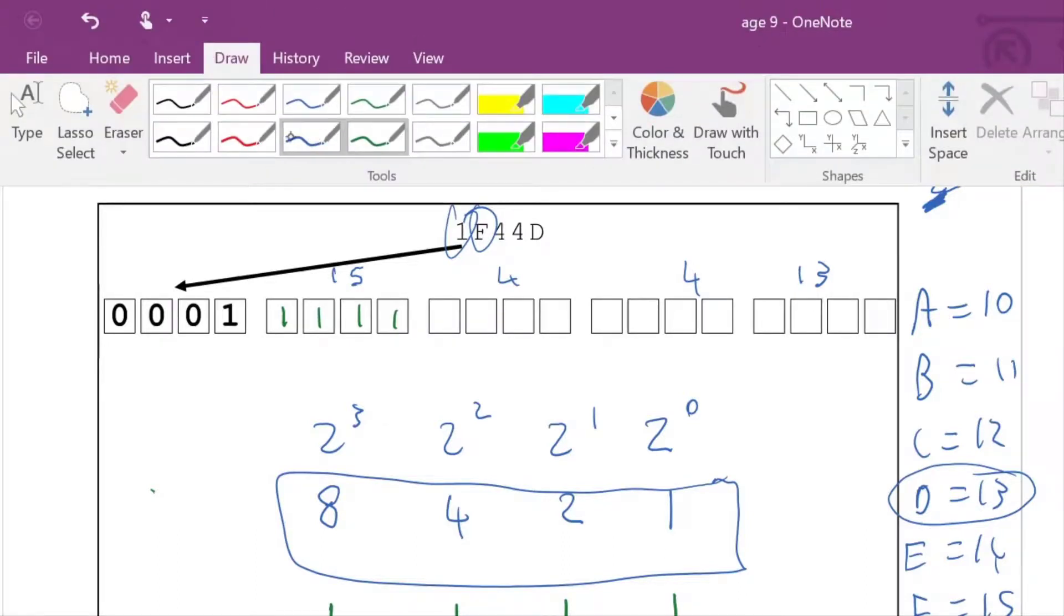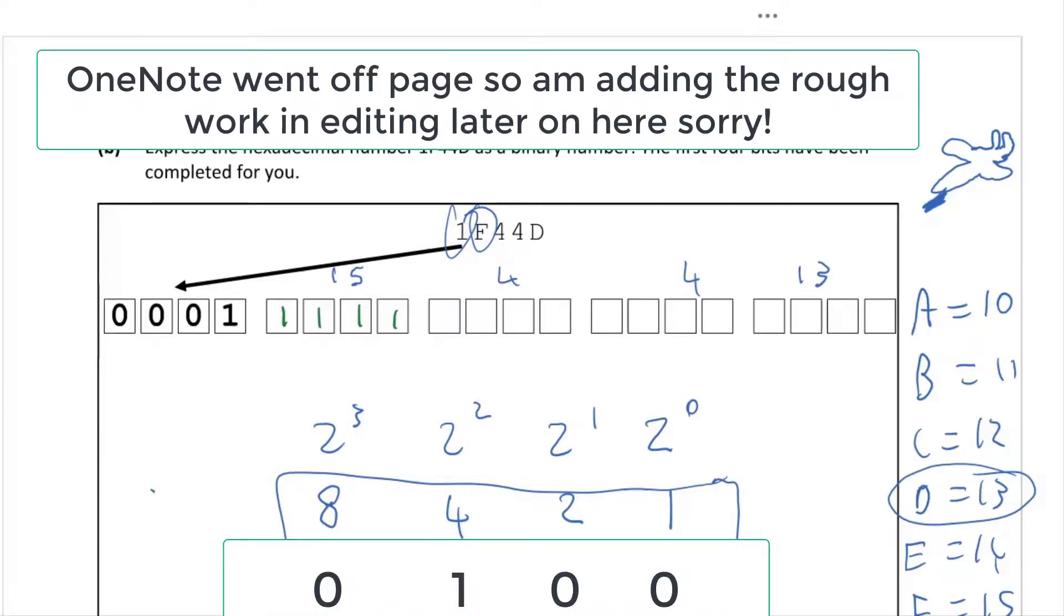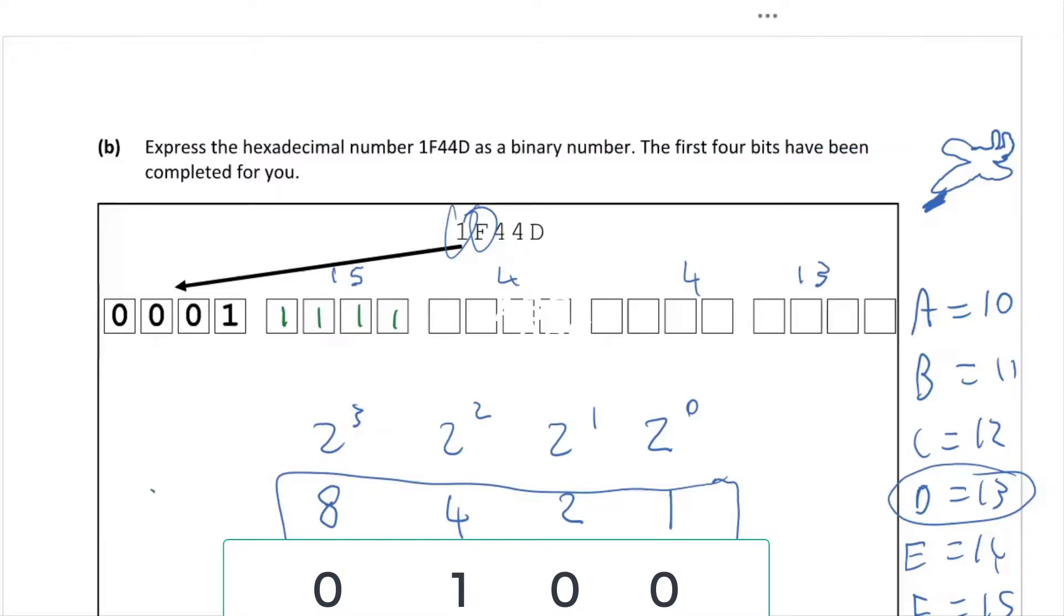Let's change color because we're going to the next one. I'm going to do 4 this time. To make a 4 I do not need an 8, so I'll write a 0 under that. Do I need a 4? Yeah, that's a great way to make a 4 is use a 4. I don't need 0, I don't need 0. Then I write the answer there: 0100.